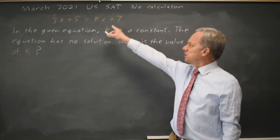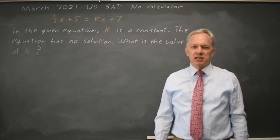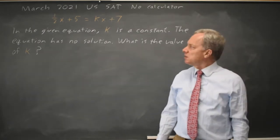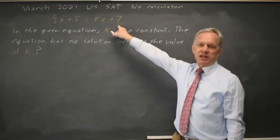College Board gives us a linear equation with no solution and they ask for the value of k, which is the slope of the right-hand side.